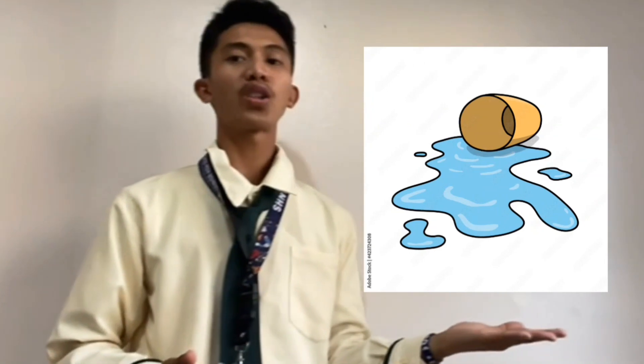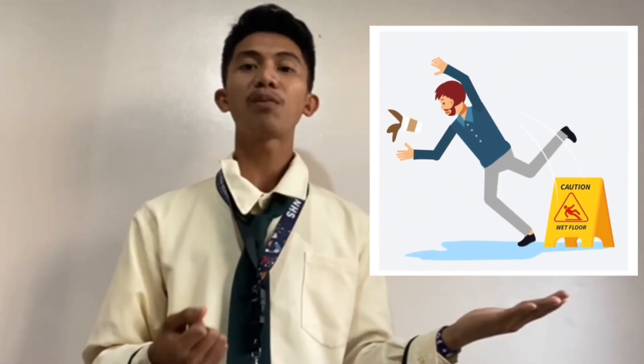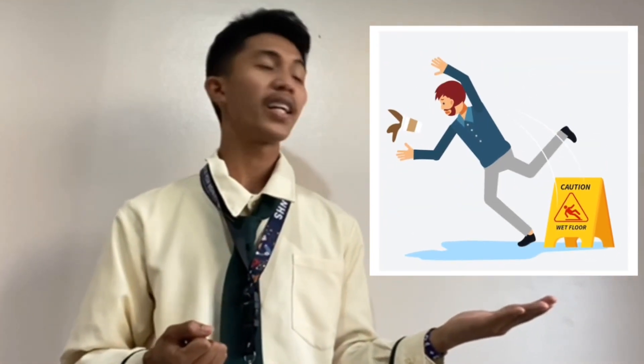Now, we will talk about the difference between hazard and risk. A hazard is anything or situation that has the potential to cause harm to people, property, or environment. For example, spilled water on the floor is a hazard. A risk is the chance or probability of getting harmed by the hazard. For example, slipping on the spilled water on the floor is the risk.